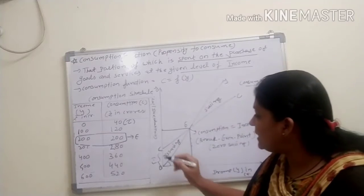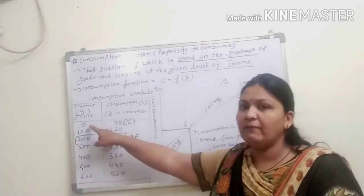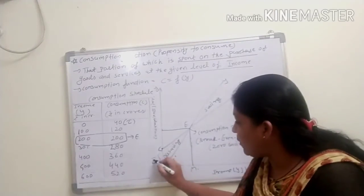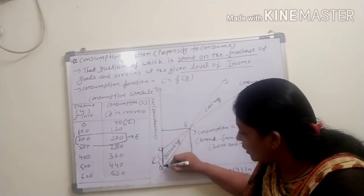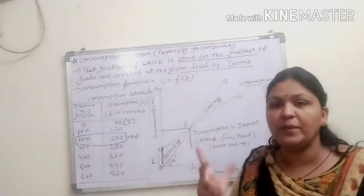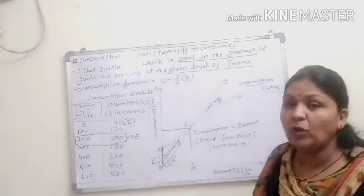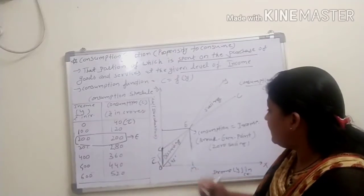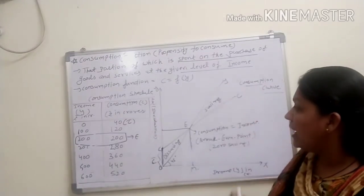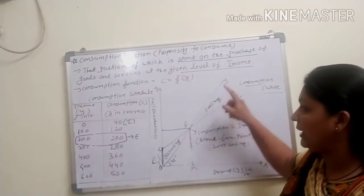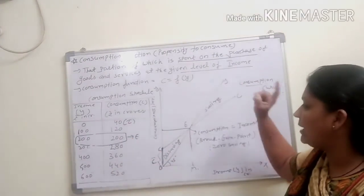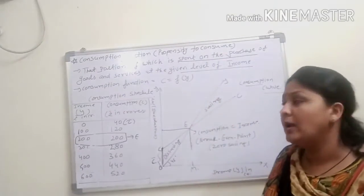The C curve starts from the autonomous consumption point of 40, not from the origin. The income line starts from the origin and is always a 45-degree line. At the point where income equals 200 and consumption equals 200, this intersection is called point E — the break-even point. At this point, consumption equals national income. Before E is the dis-saving area, and after E saving begins.